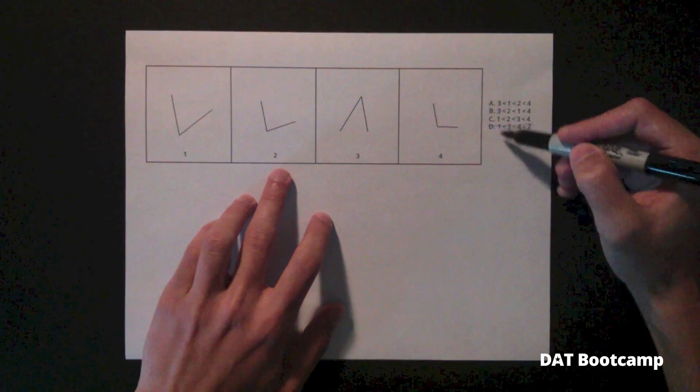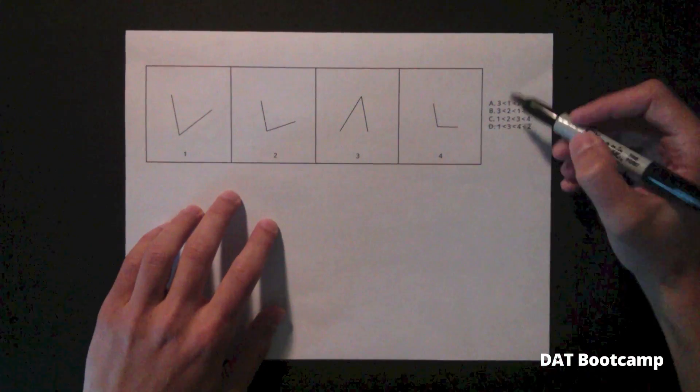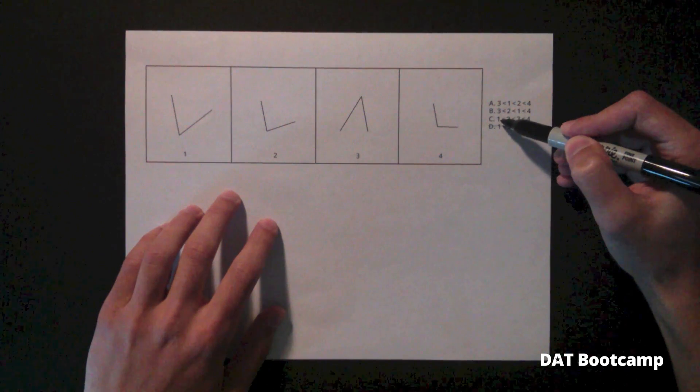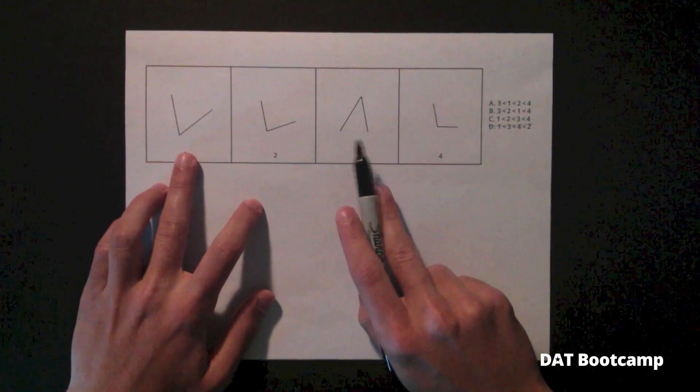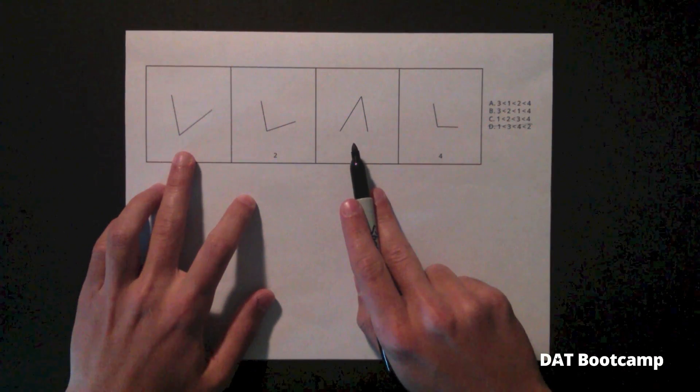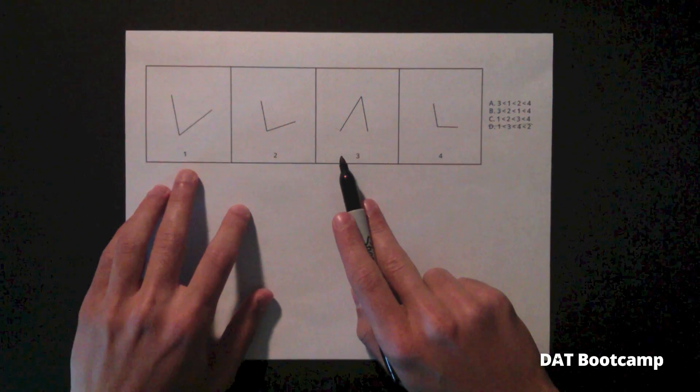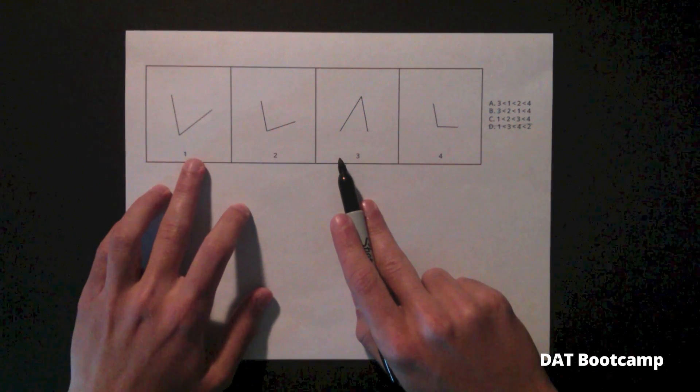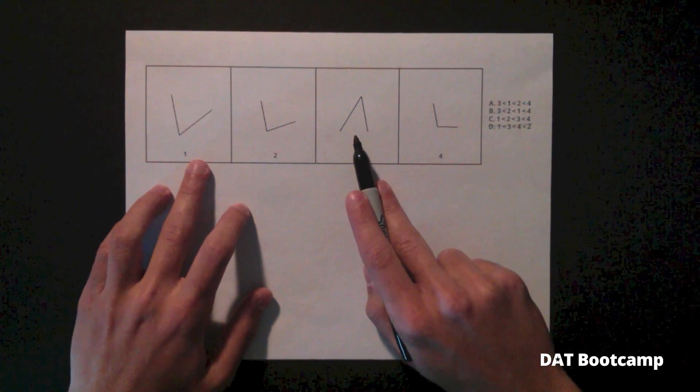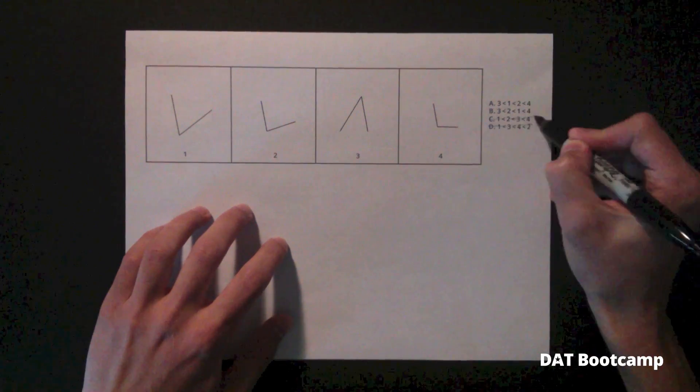Let's move on to the smallest angle. We see the smallest angle is either three or one. So let's just compare these two angles. Now this one's a little more difficult because they're both acute, but we can see through observation that three must be smaller than one. Therefore, C must also be wrong.